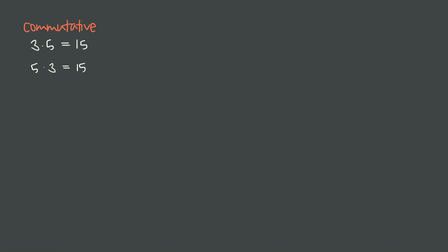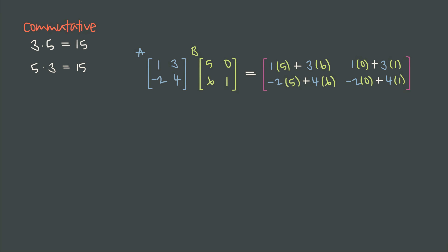Here's the critical thing about matrix multiplication you might have already wondered about. When we multiply two real numbers — like 3 times 5 — the order doesn't matter; we always get 15. That means basic multiplication is commutative. But that's not true for matrices. If we multiply A by B, our result is a 2-by-2 matrix — we multiply our rows by our columns and get the matrix 23, 3, 14, 4.